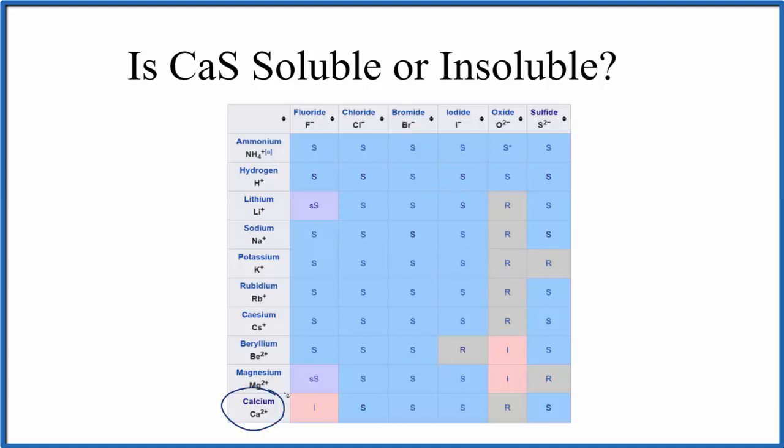So we find calcium here, and then sulfide. So we go over, and then we go down, and there's this S. That means that it's soluble. So according to our solubility table, it's soluble.